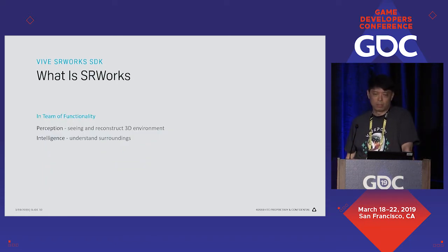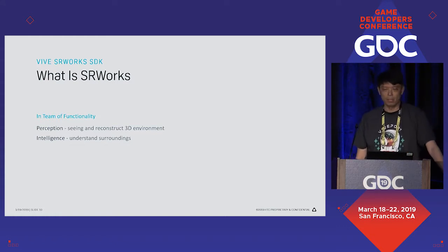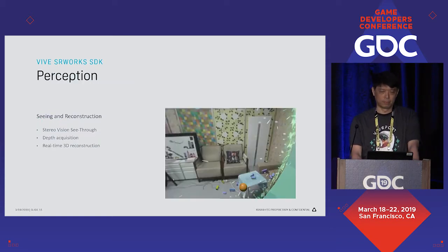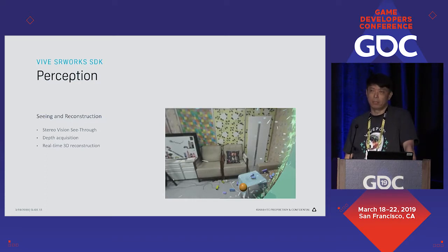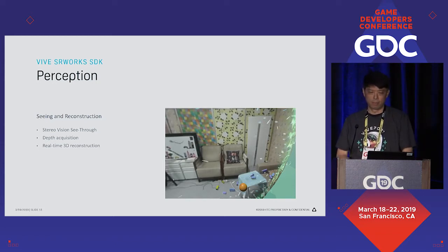What is SRWorks in terms of functionality? SRWorks has a perception ability to see and reconstruct the 3D geometry of the environment. Furthermore, it has intelligence to understand your surroundings. In order to achieve this perception ability, SRWorks provides three major functions: stereo see-through (SISU), depth acquisition, and 3D reconstruction. The Vive Pro is the first hardware SRWorks supports. Let's go over each function one by one.